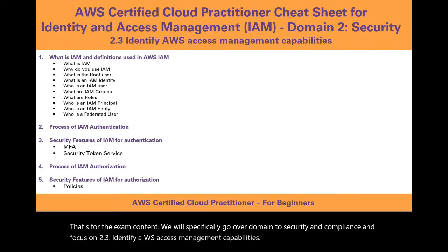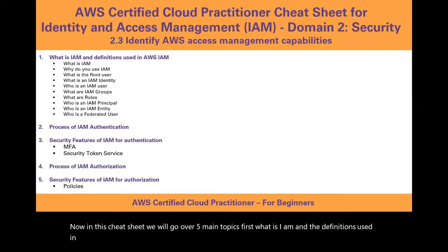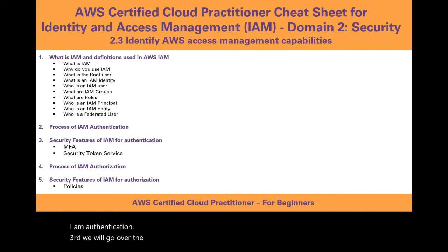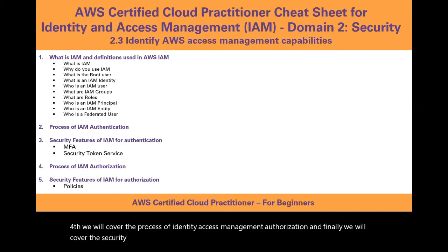In this cheat sheet, we will go over five main topics. First, what is IAM and the definitions used in AWS Identity and Access Management. Second, we will cover the process of IAM authentication. Third, we will go over the security features of IAM for authentication. Fourth, we will cover the process of Identity Access Management authorization. And finally, we will cover the security features of IAM for authorization.